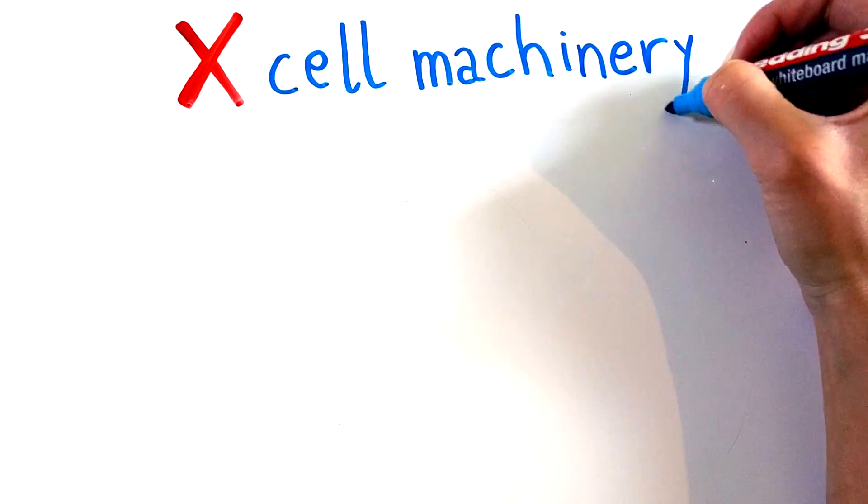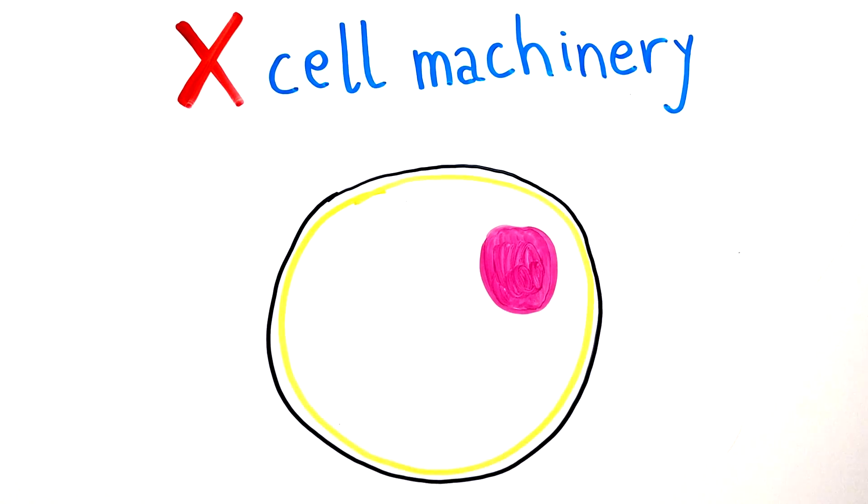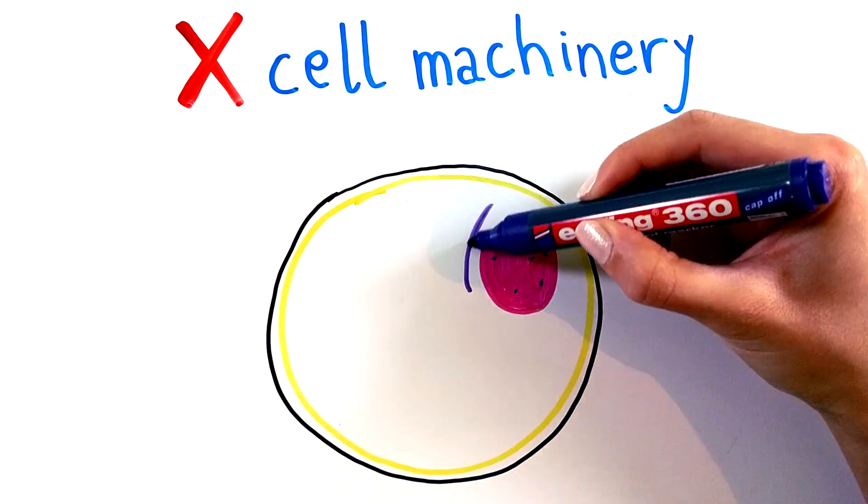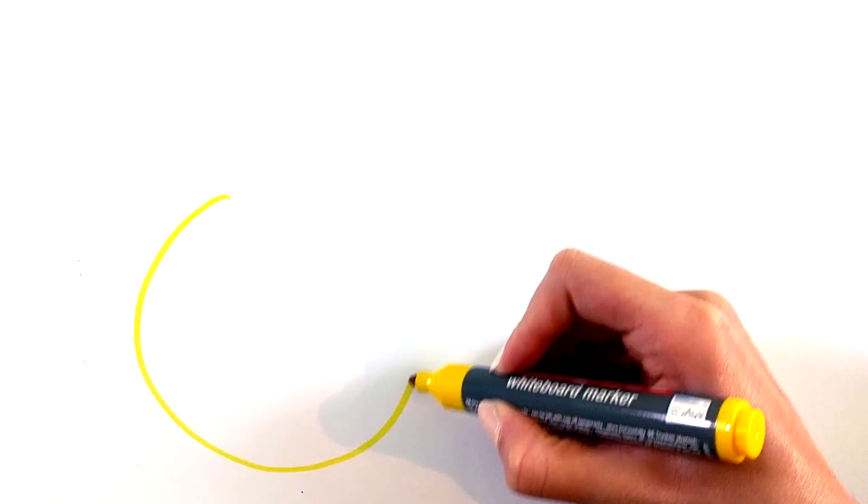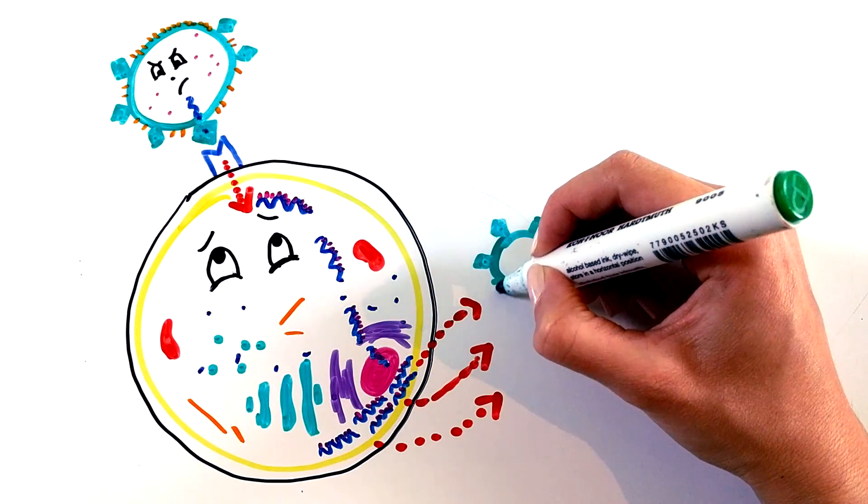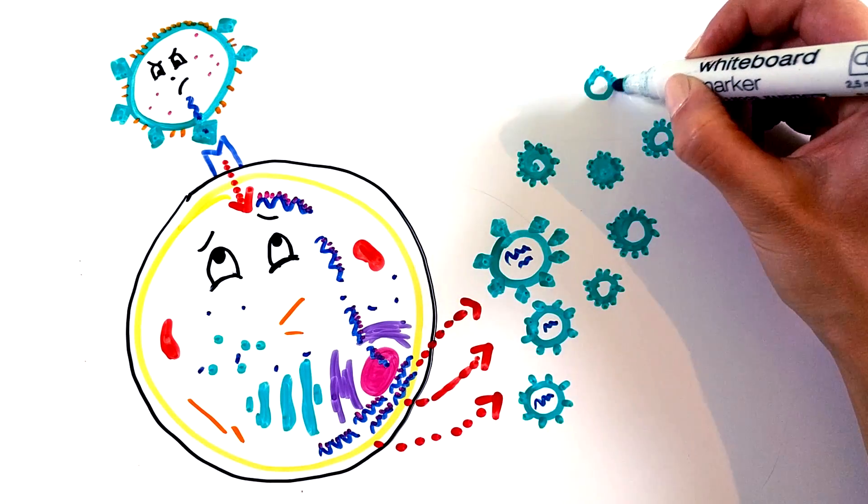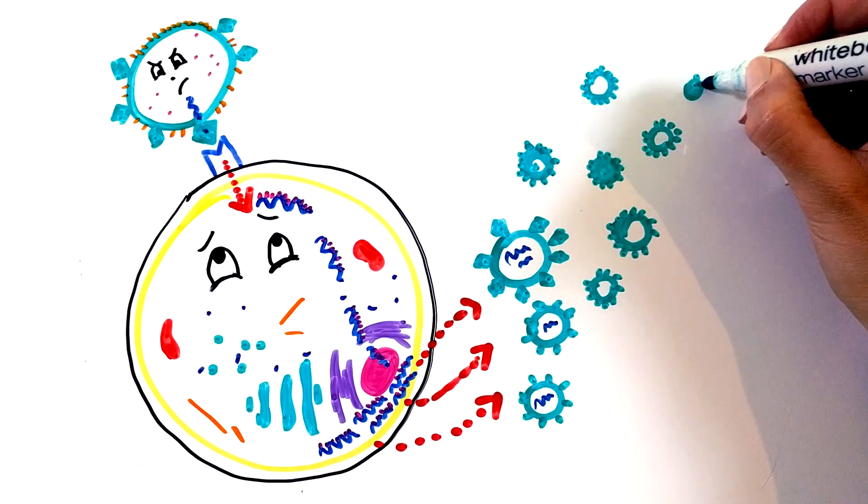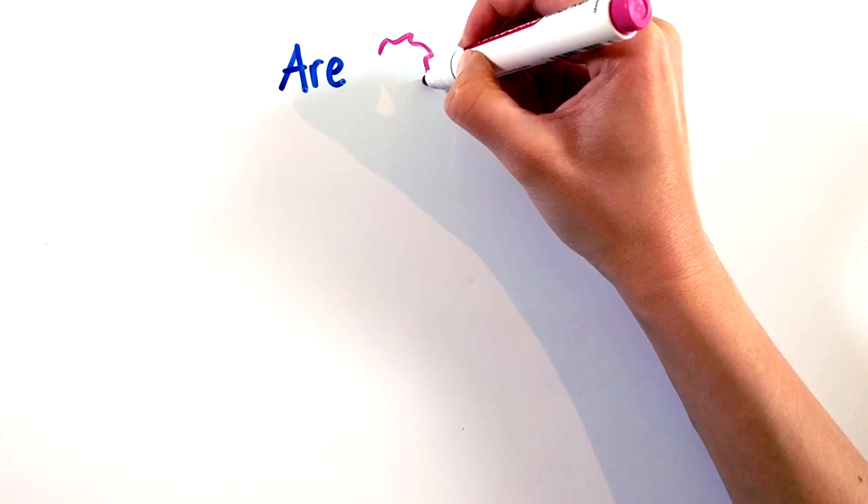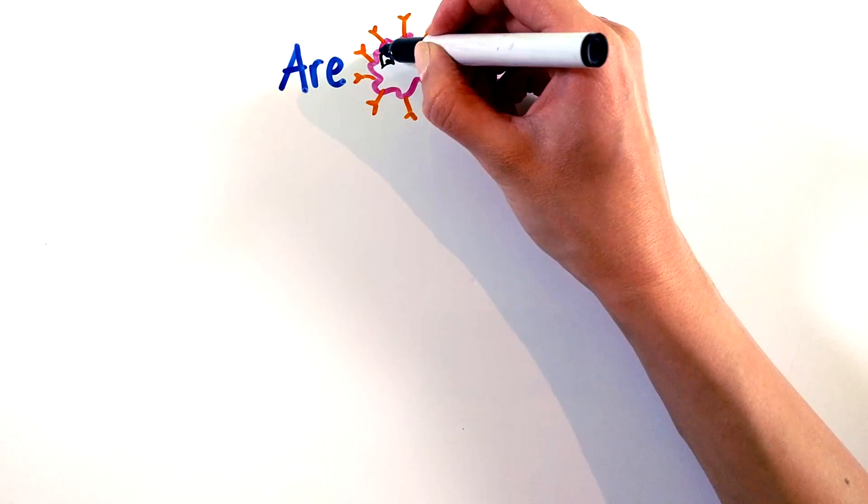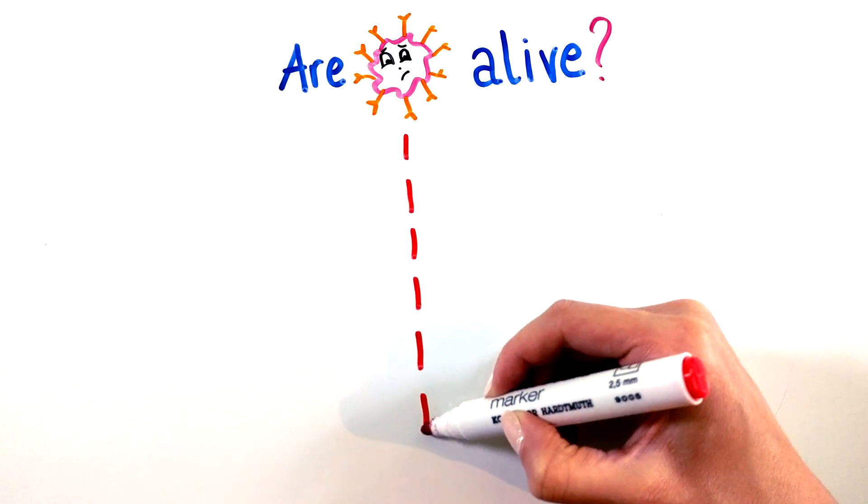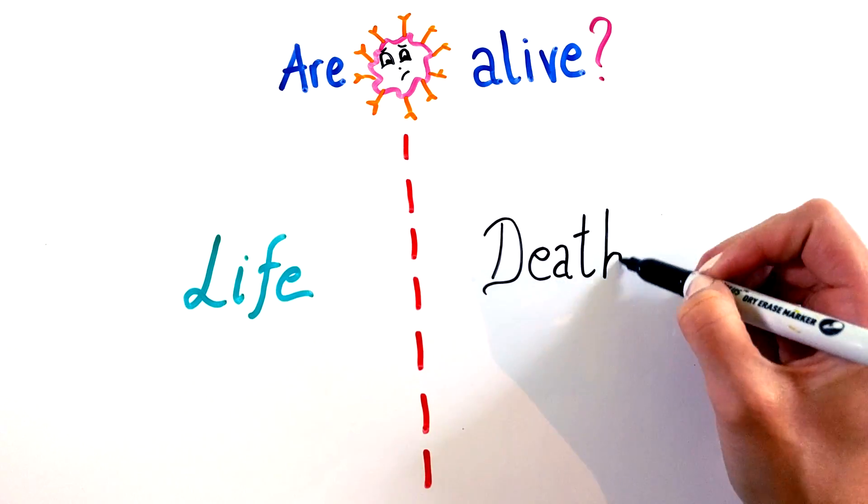In short, viruses don't possess the cell machinery which is necessary for reproduction. They lack nuclei, organelles, or ribosomes that all other cells own. So they have to invade, inject their genetic material, and utilize other cells as an engine. As a result, they multiply, spread, and ultimately cause disease. That is exactly why many scientists don't consider them to be living organisms at all. Even though they carry genetic material and can mutate and adapt, viruses cannot survive without a host cell.